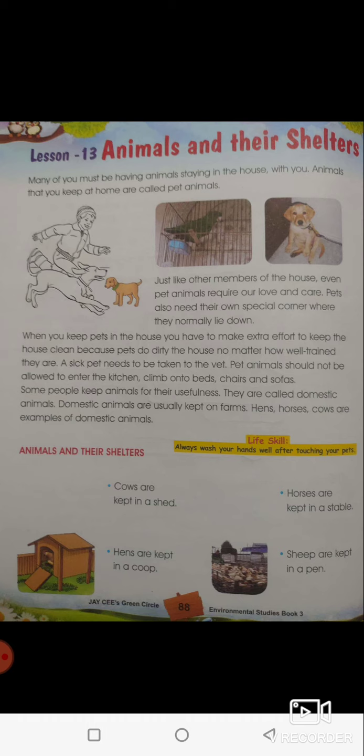We also learnt different types of animals. Pet animals like pet dog, pet cat, parrot — anything that we have as a pet is called a pet animal. Domestic animals we also saw, like horse, cows, and hens. Domestic animals are useful for us because cows give us milk, we get cow dung for manure, horses are used for riding and carrying things, and hens for meat, and so on.